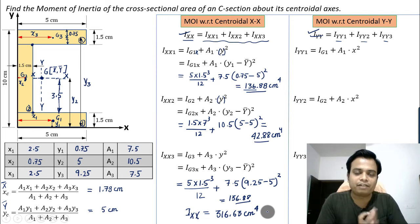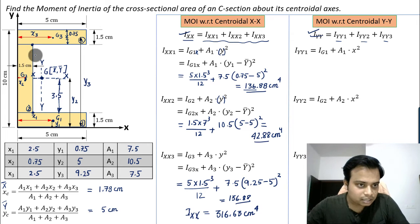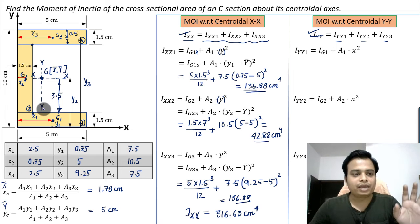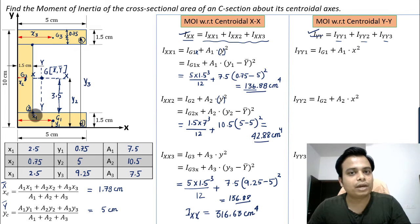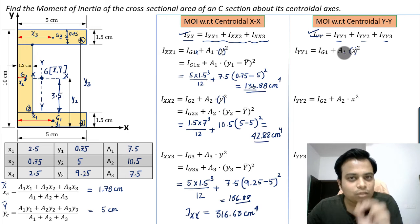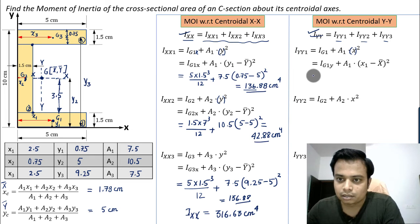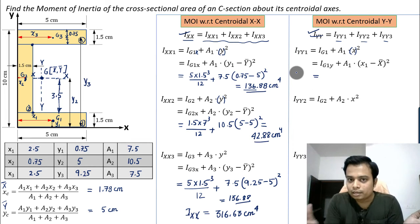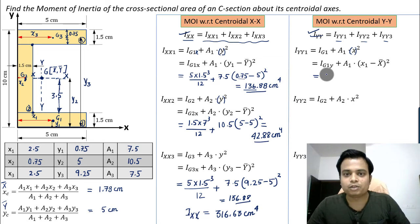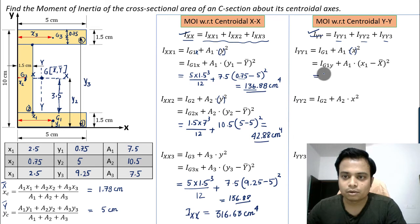Now we find the MOI with respect to centroidal Y-Y. We find the individual MOIs of all three rectangles about Y-Y and sum them up. Here we focus on the horizontal distance between centroids. Instead of bd³/12, the formula becomes db³/12.